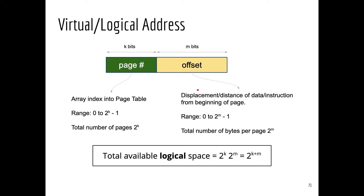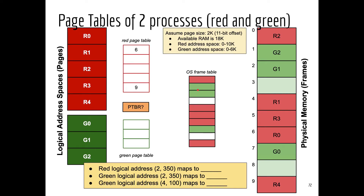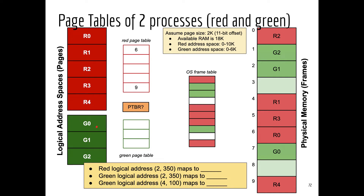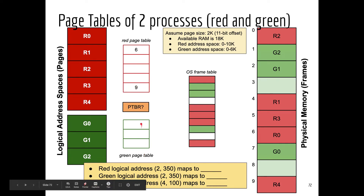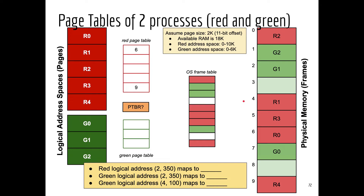Let's see how paging works for two processes — Red and Green. Red has five pages and Green has three pages in their logical address space. Each process must be associated with its own page table: Red's page table has five entries and Green's has three entries. Assuming a page size of 2K (that is, 2^11, so 11 bits are used for the offset), Red uses 10K total (5 × 2K) and Green uses 6K total of logical memory. On the right side of the screen you can see how memory frames are allocated to both processes.